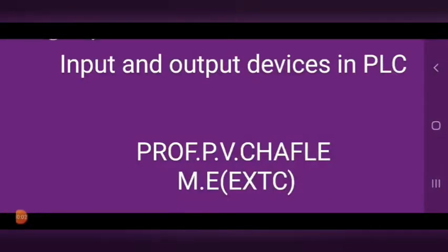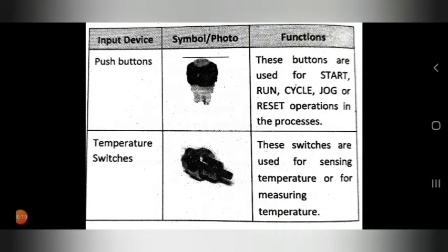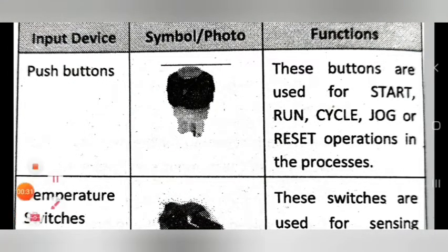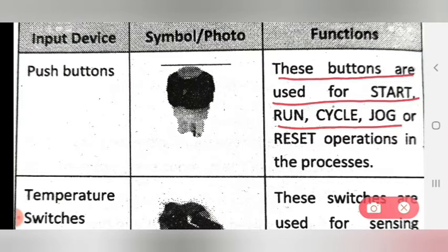Hello students, today we see the input and output devices in PLC. The first input device is the push button. You already see the symbol of push button. The function of push button is that it is used for start, run, cycle, jog, or reset operations in the process.